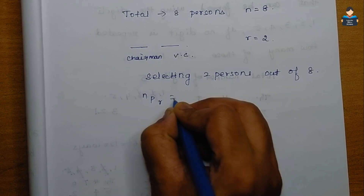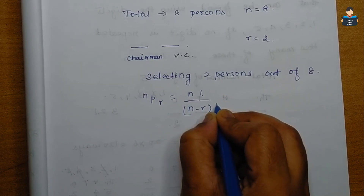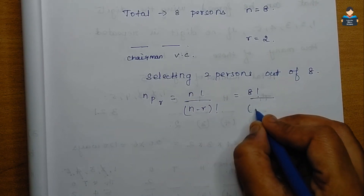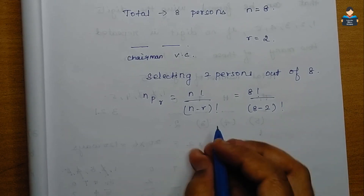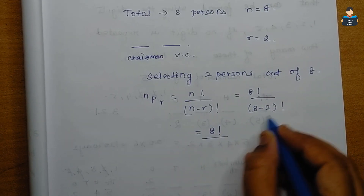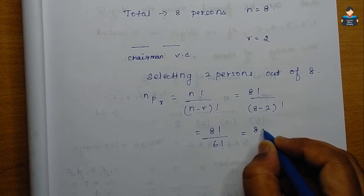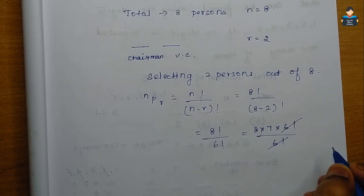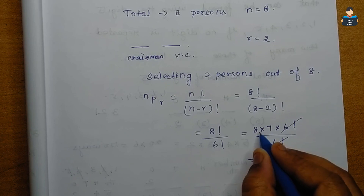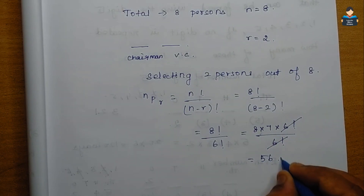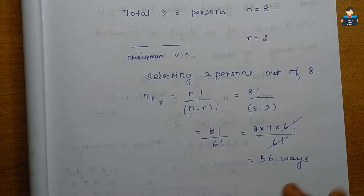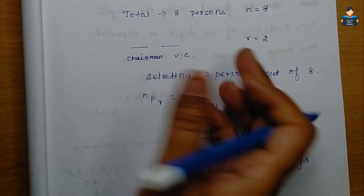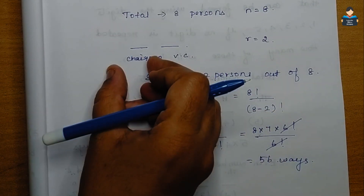Using the formula nPr = n! / (n - r)!, here n = 8 and r = 2. So 8P2 = 8! / (8 - 2)! = 8! / 6! = 8 × 7 × 6! / 6!. The 6! cancels out, giving us 8 × 7 = 56. So there are 56 ways to arrange the chairman and vice-chairman.